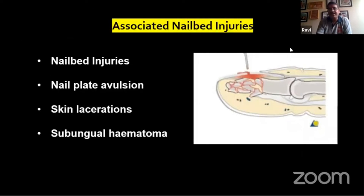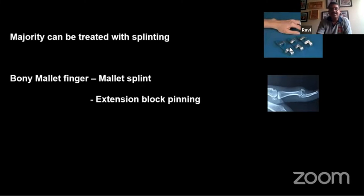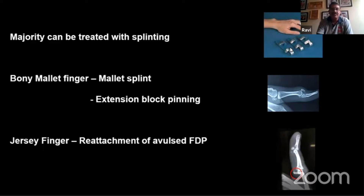Often we have associated nail bed injuries which should be factored into treatment. These can take the form of nail bed injuries, avulsions of the nail plate, skin lacerations, or subungual hematomas. Treatment for distal phalanx fractures is generally straightforward — the majority can be treated with splinting or K-wire fixation. Bony mallet fingers can be treated with a mallet finger splint, or in cases with joint subluxation or a large fragment, techniques such as individual fragment fixation or extension block pinning. Jersey finger, with avulsion of the FDP, necessitates reattachment of the avulsed FDP back to its bony bed.